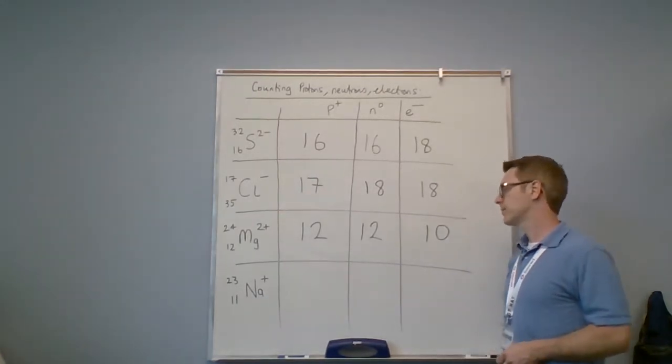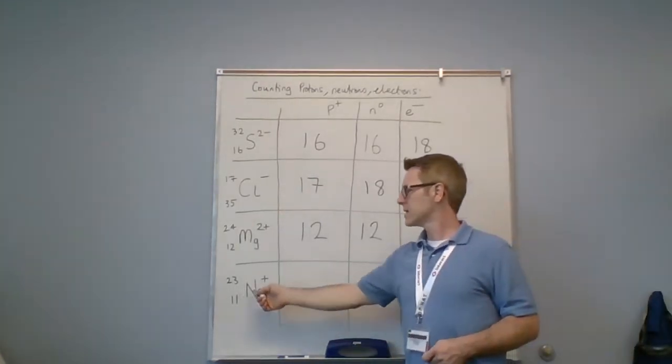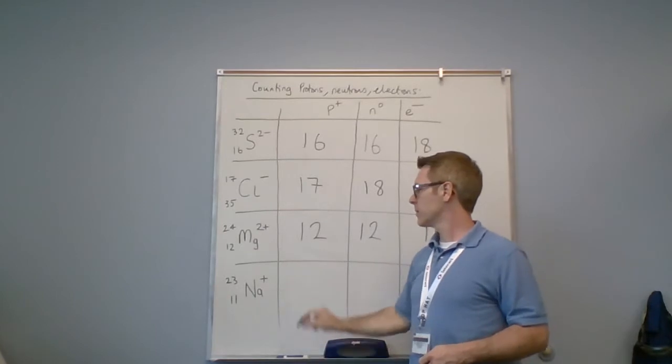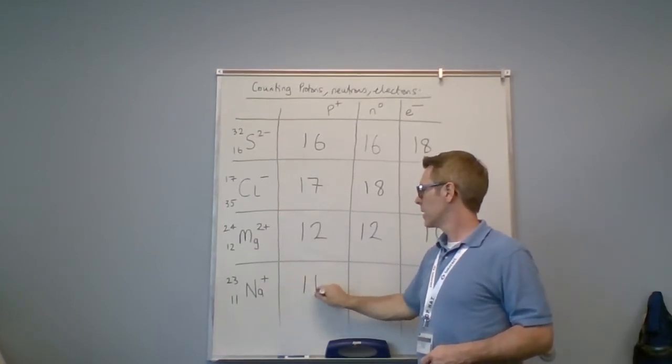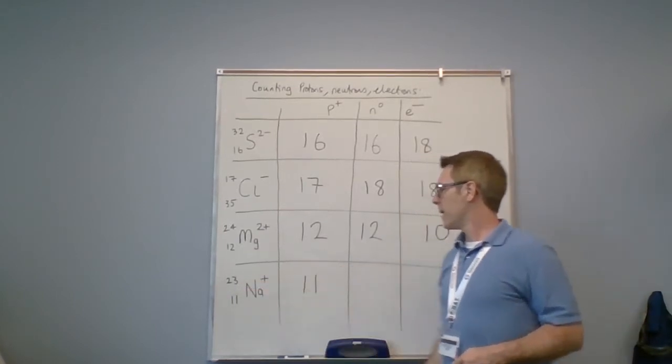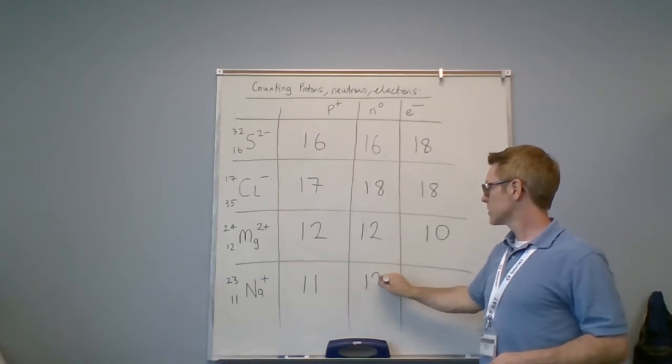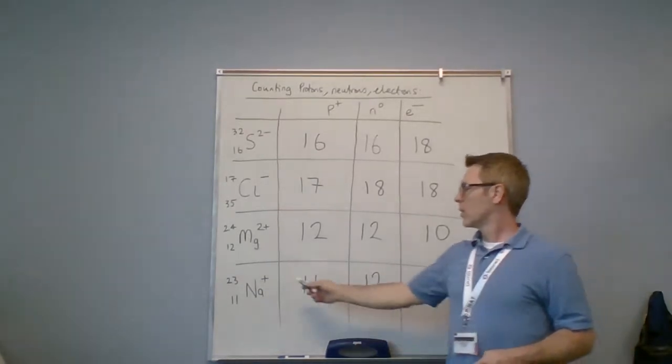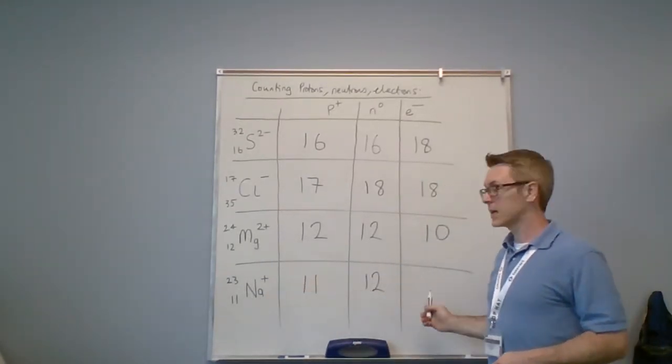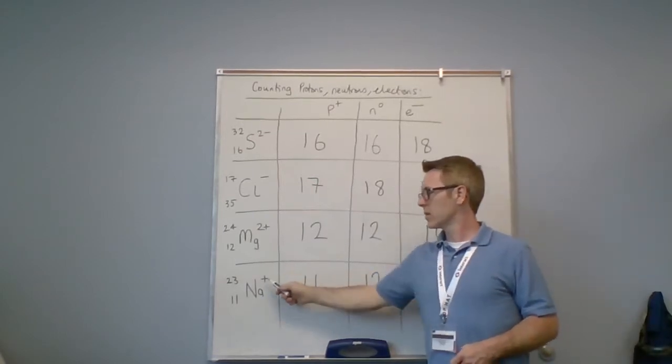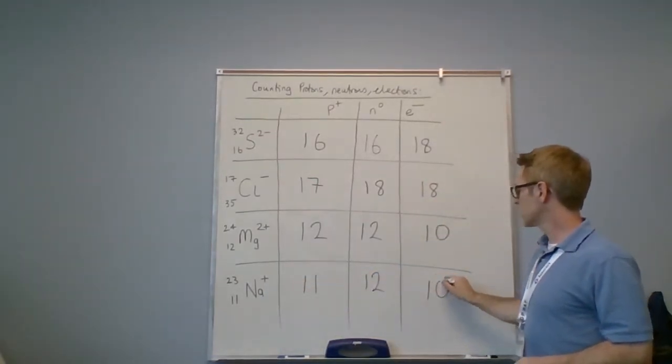Finally, sodium with 11 protons. 23 minus 11 is 12 neutrons. Ordinarily we'd have 11 electrons; on this occasion we've got one plus charge, so we've lost an electron.